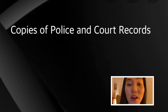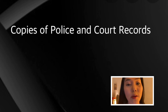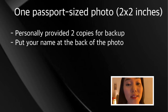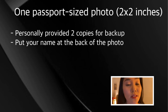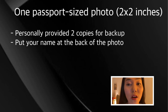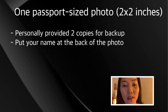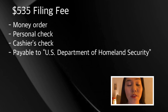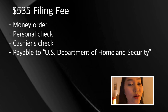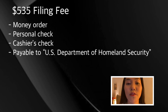Number twelve, one passport-size photo, two by two inches in size. Both the petitioner (U.S. citizen) and the beneficiary (foreign national) will provide one color passport-style photograph taken within 30 days of filing the petition. Make sure to put your name at the back of the photo. Number thirteen, the filing fee of $535. Pay it through money order, personal check, or cashier's check, and address it to the U.S. Department of Homeland Security. Cash is not accepted.